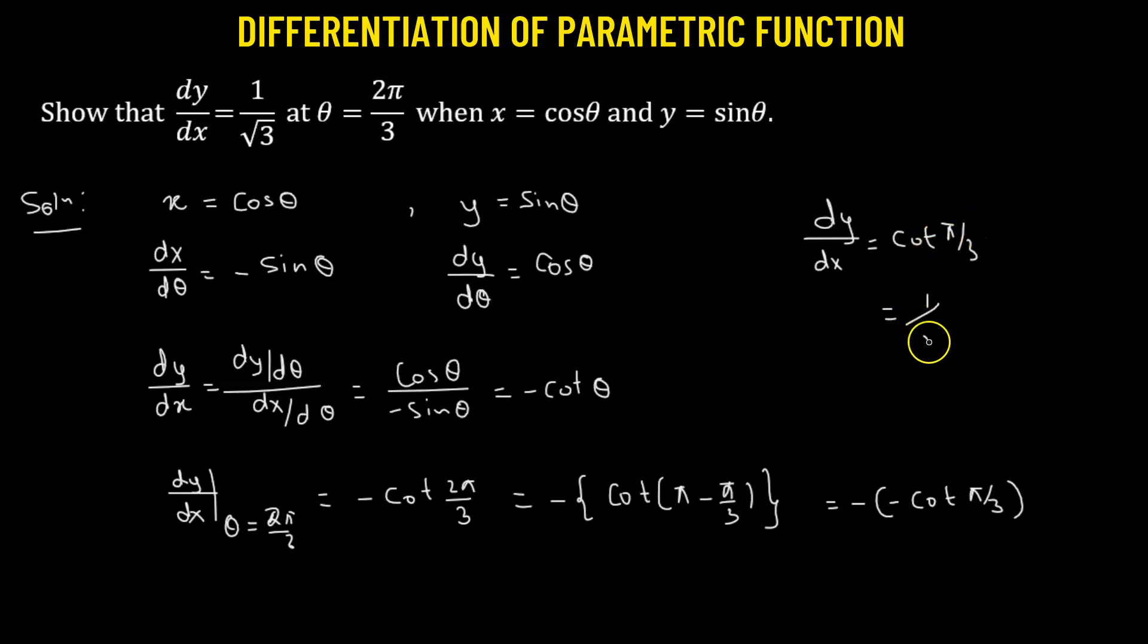This is a standard value which is 1 over square root of 3. Hence we have successfully showed the derivative of y with respect to x at theta equals to 2π over 3 radians has the value 1 over square root of 3.